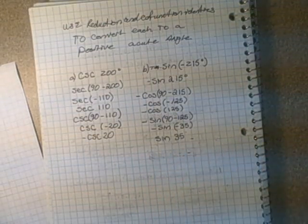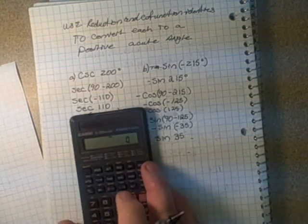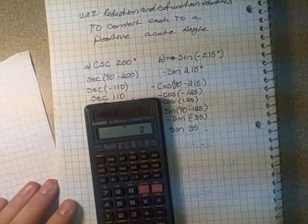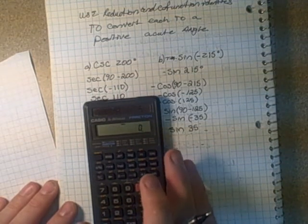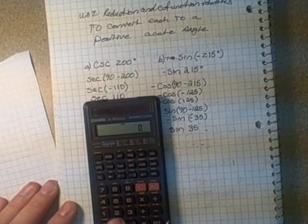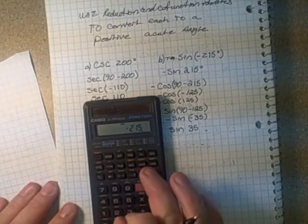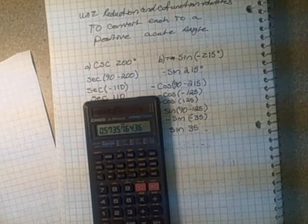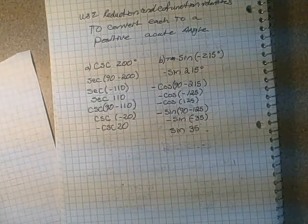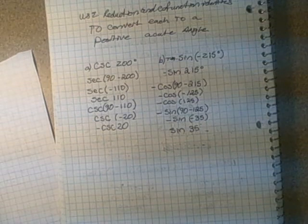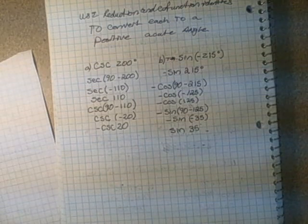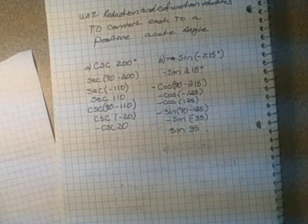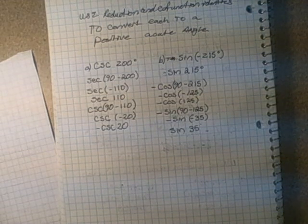We can check this on the calculator: sine 35 gives 0.5736. And negative sine of negative 215 also gives 0.5736, so we're good on both. That concludes the tutorial for section 4.3. In our next tutorial, we'll be looking at sum and difference identities and using them to calculate exact values. Thank you.